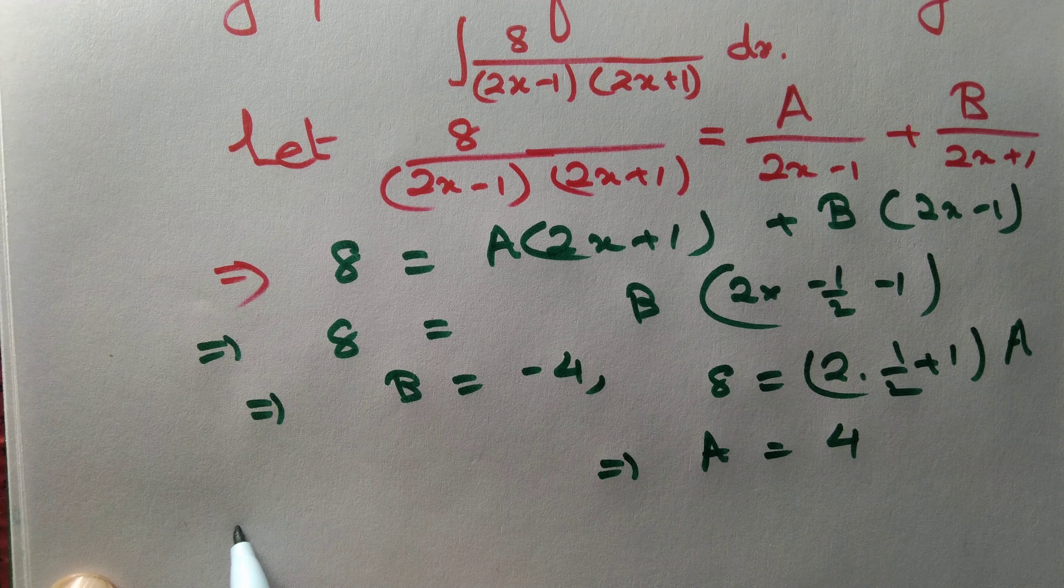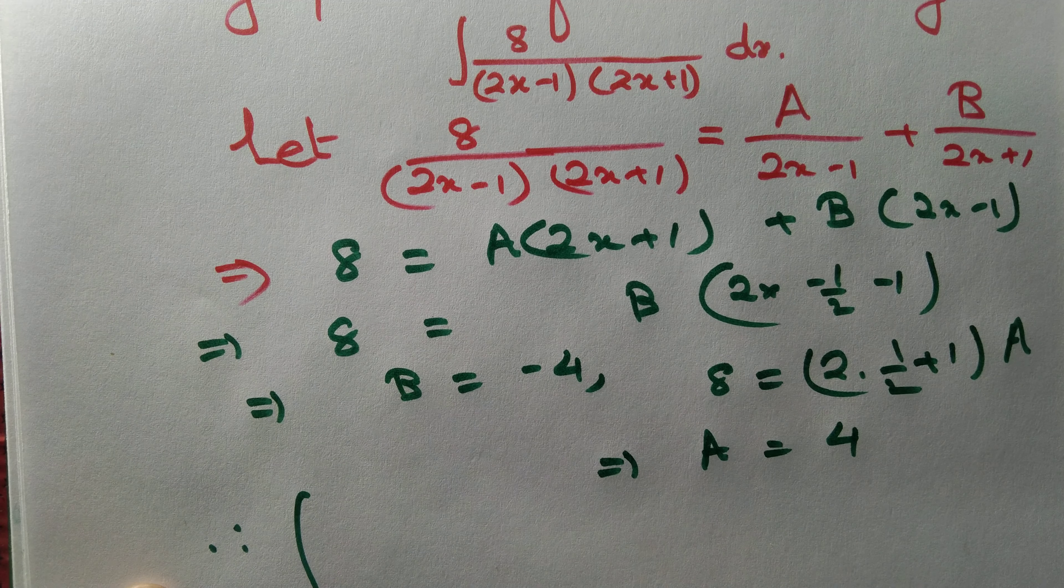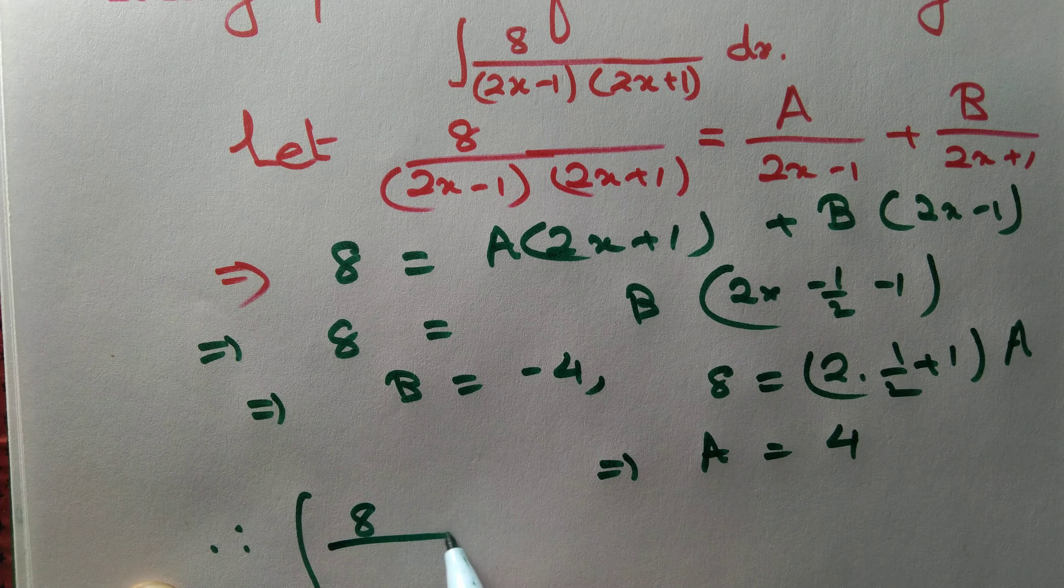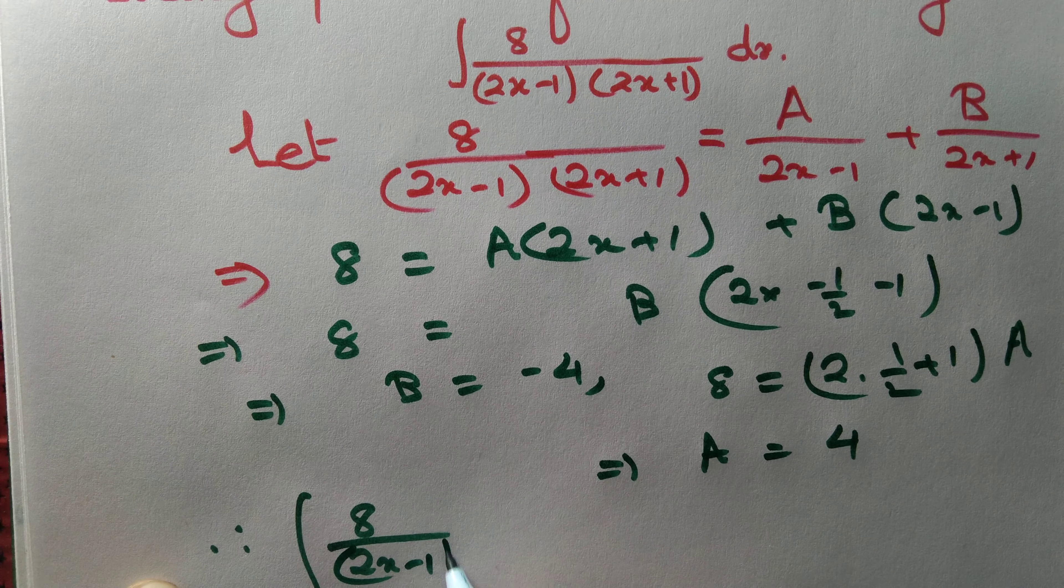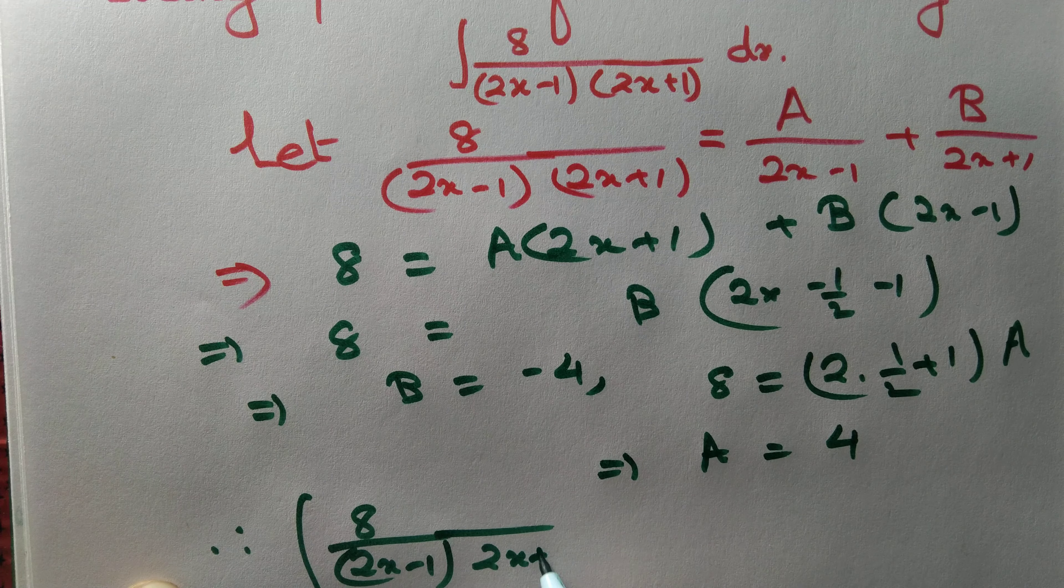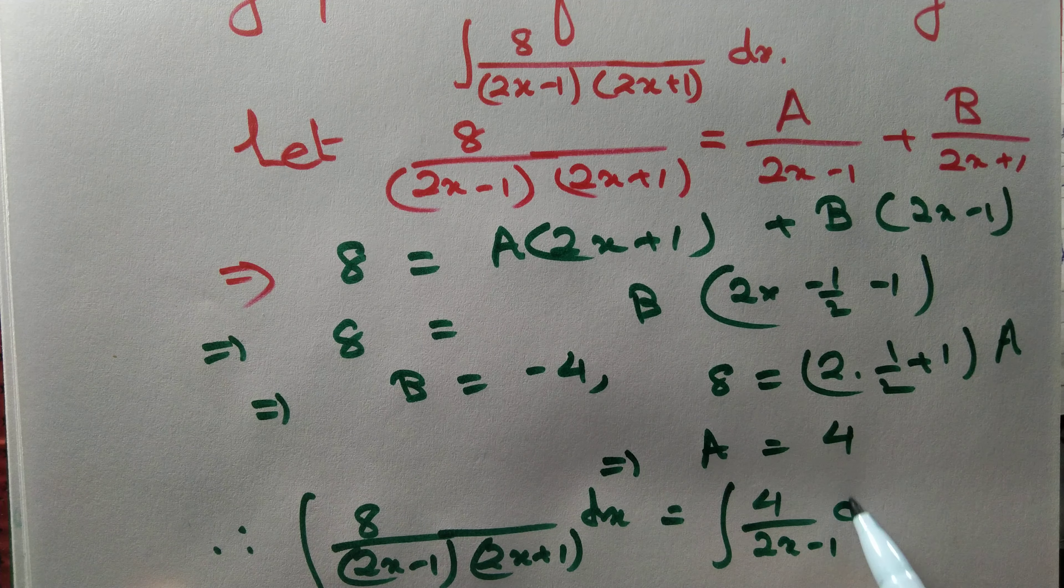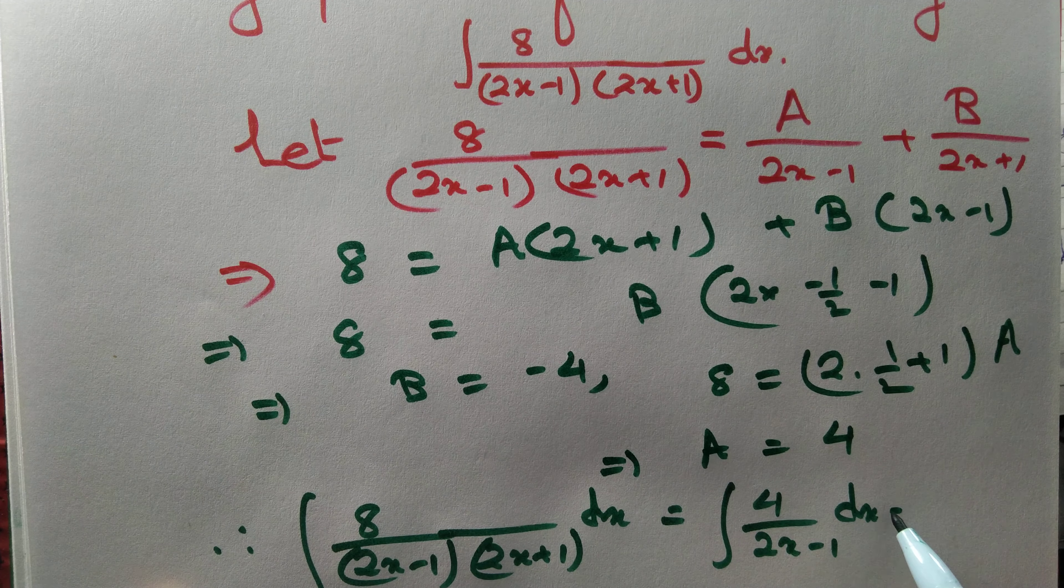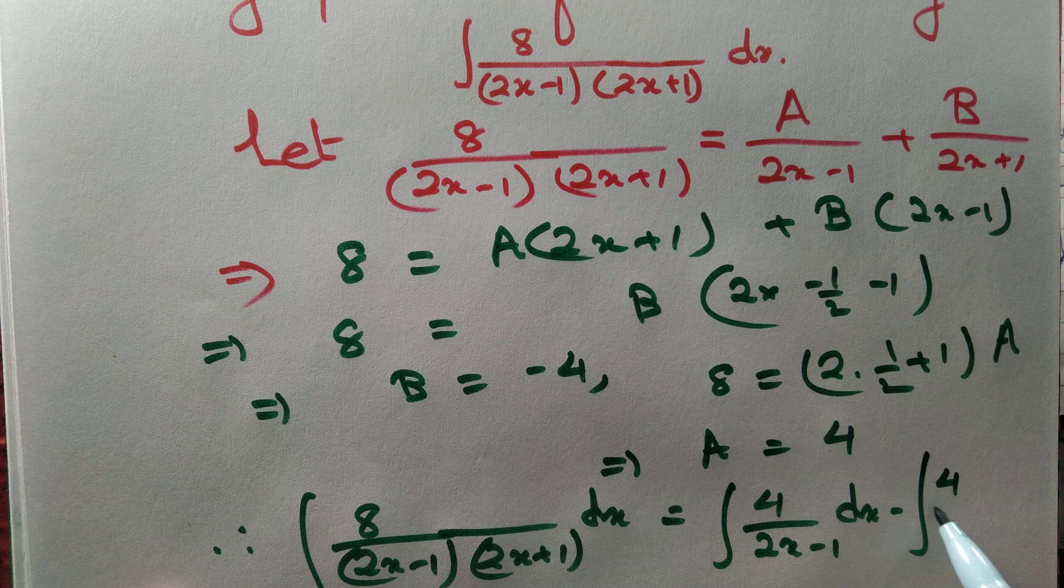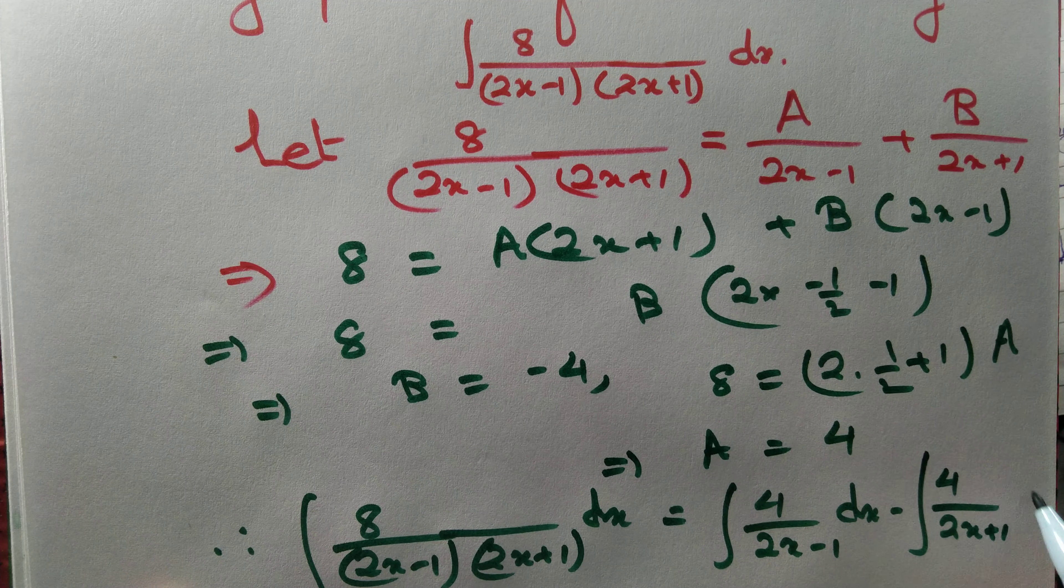Therefore, integral of 8 by 2x minus 1 whole thing into 2x plus 1 dx equal to, we got a equal to 4, so integral of 4 by 2x minus 1 dx minus integral of 4 by 2x plus 1 dx.